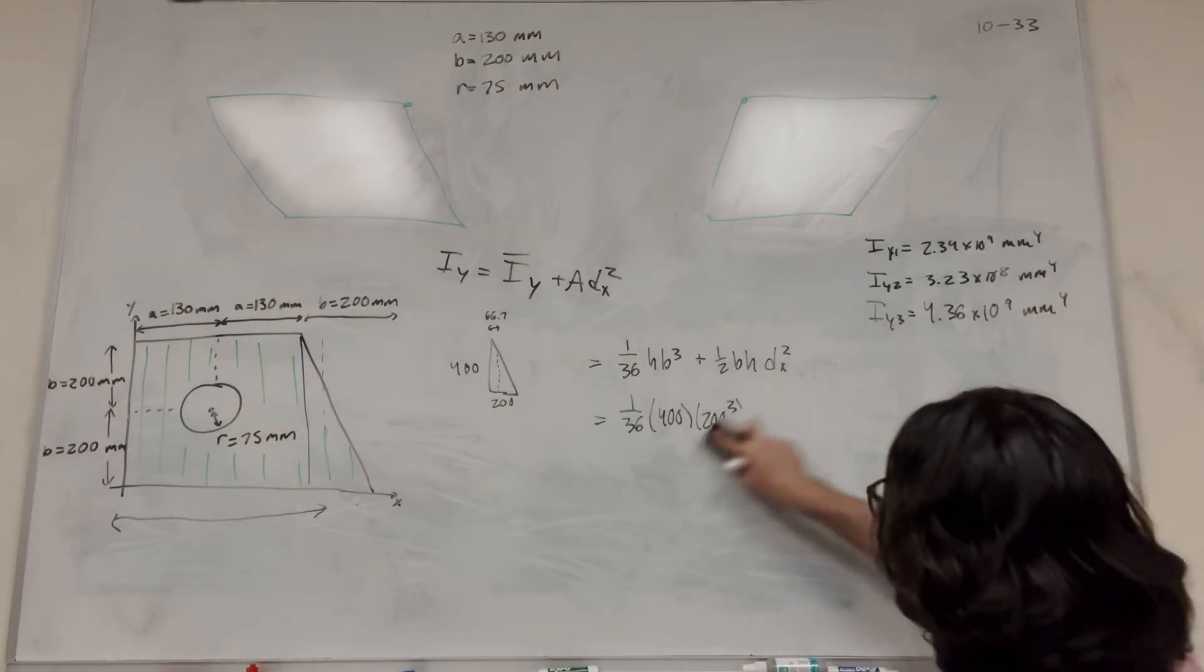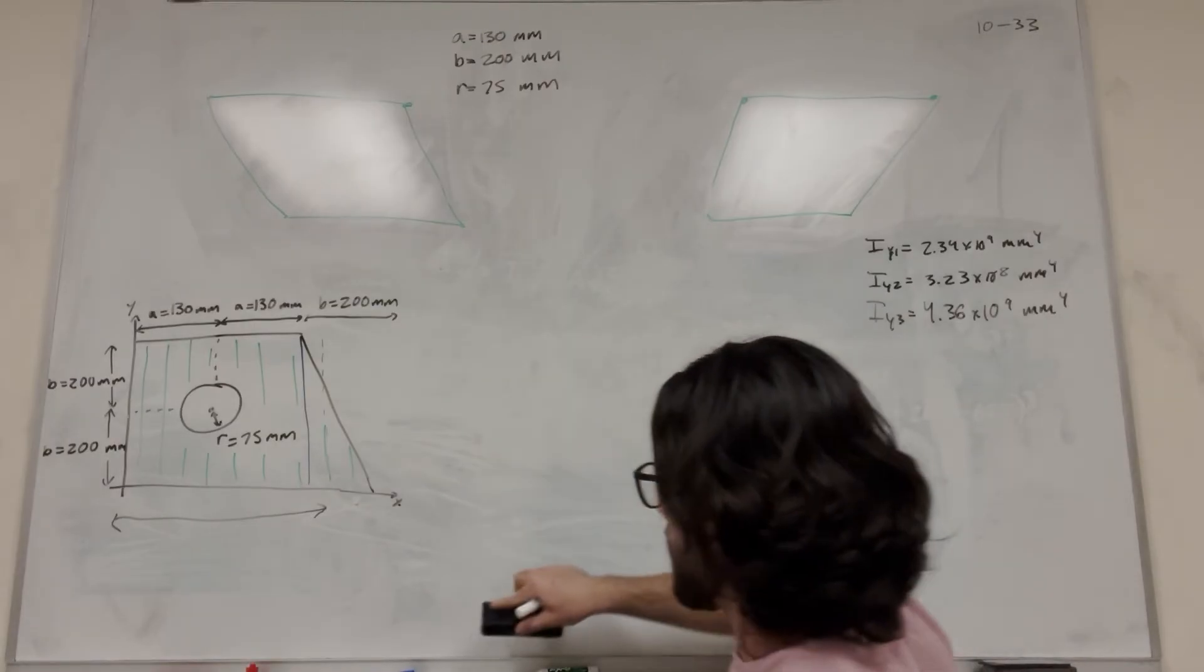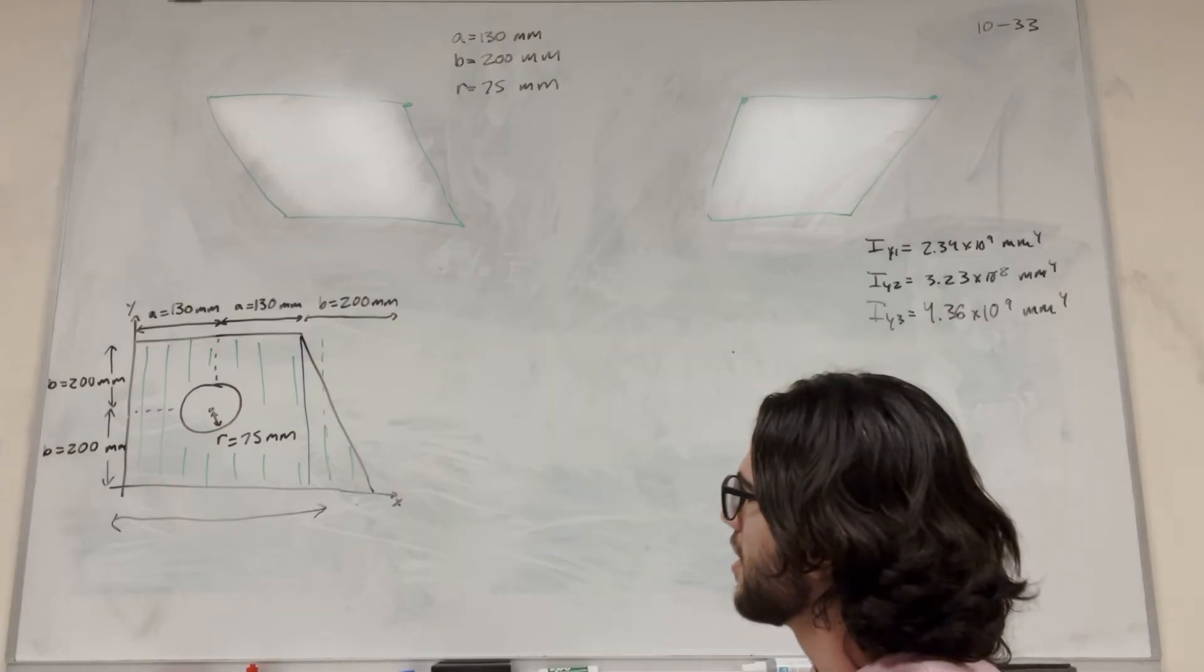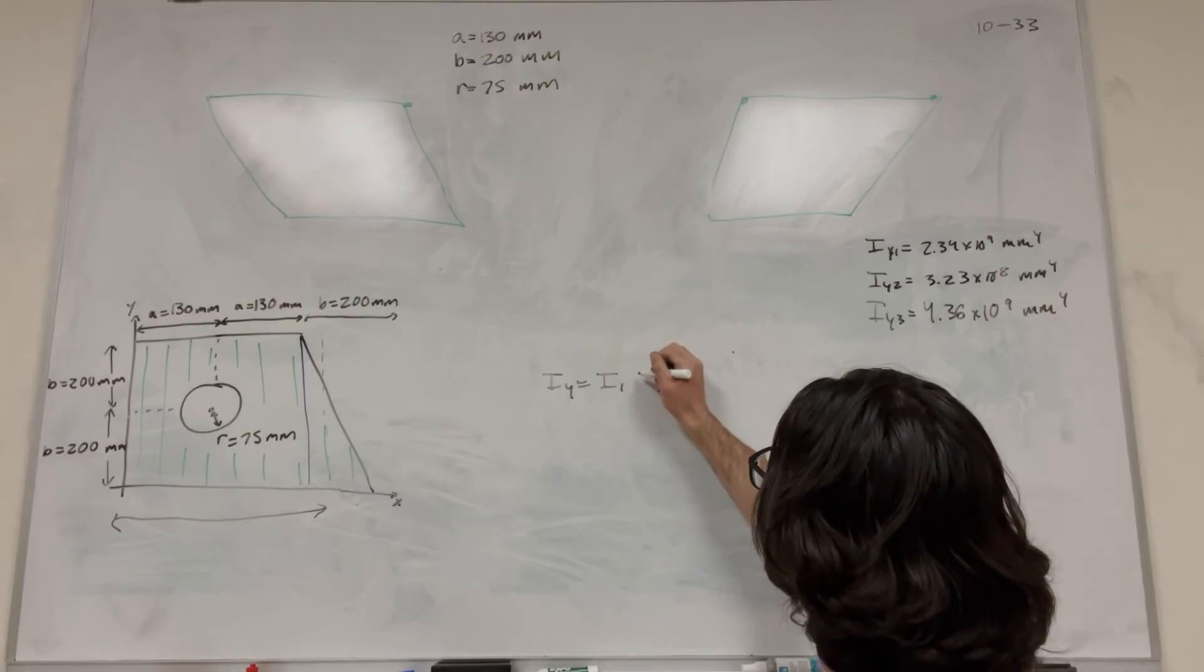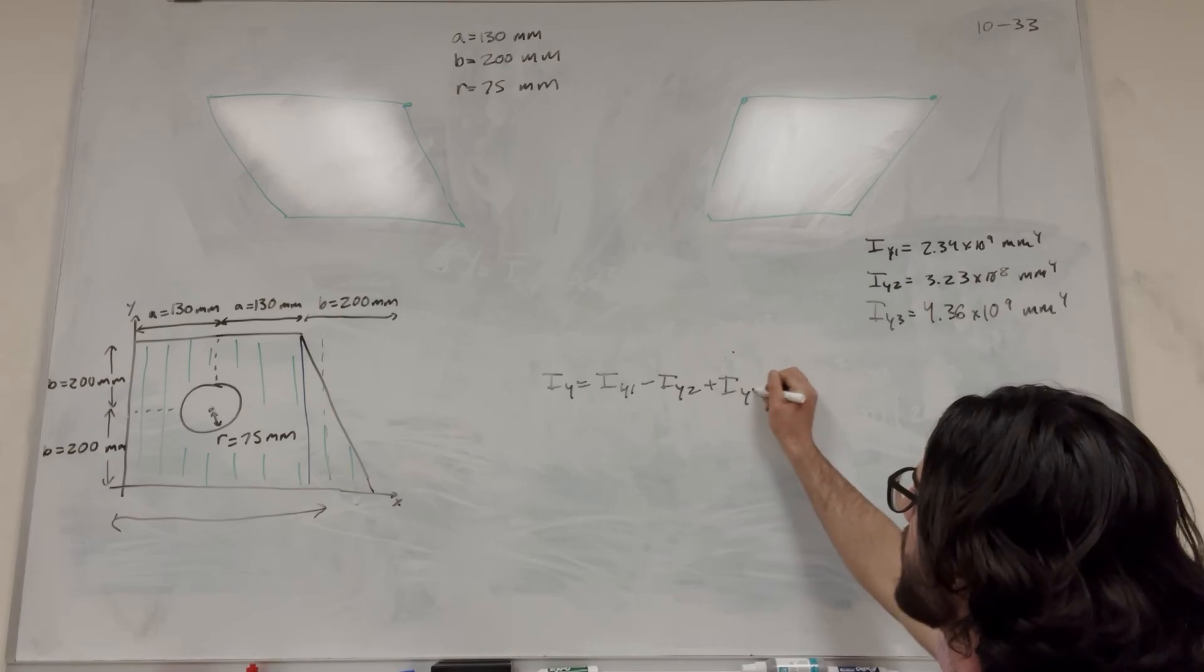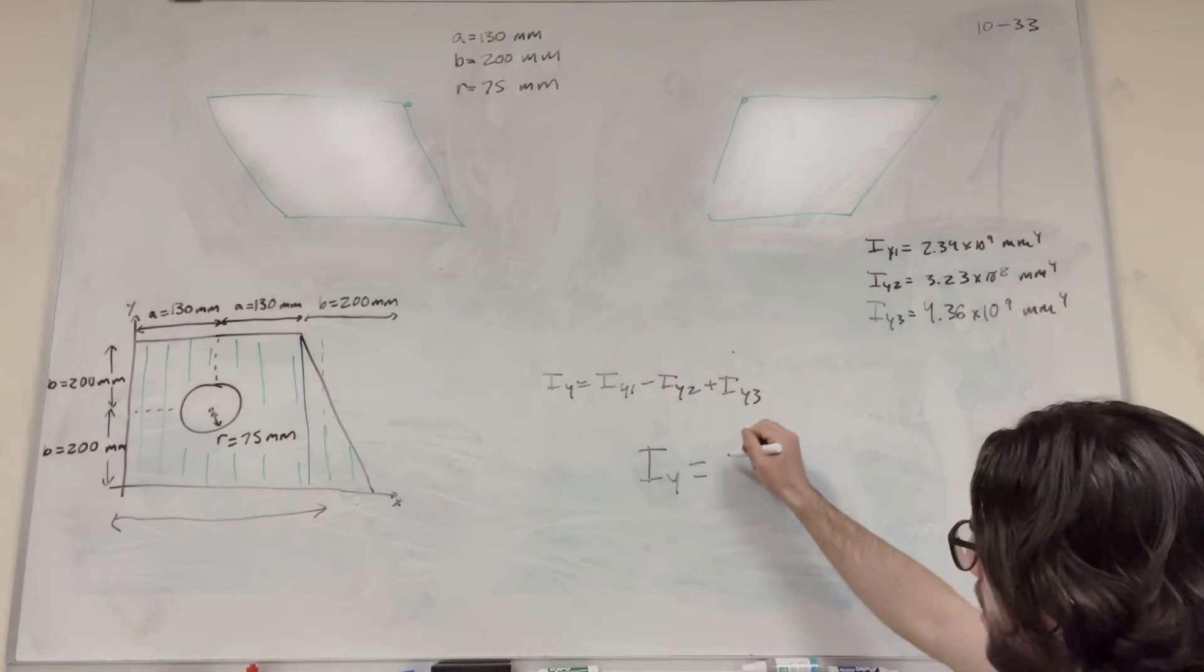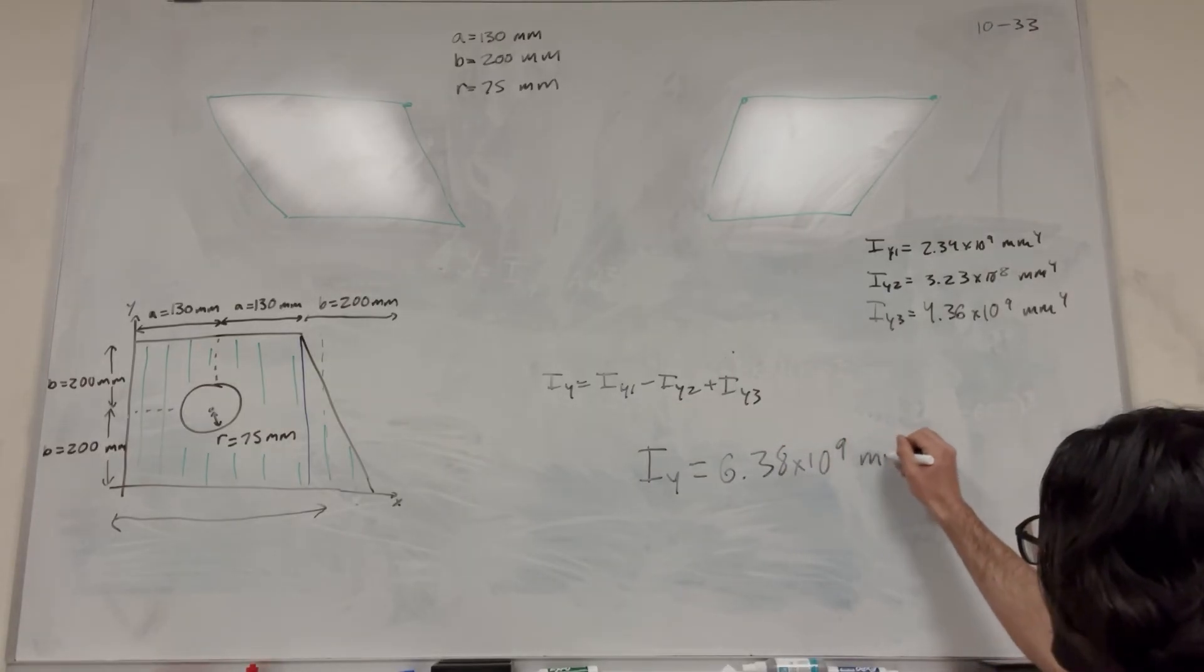Finally, we've got our three numbers. Usually you just add these three numbers together to get your total. But in this case, the circle is what we're going to need to subtract because the circle is taking out area. It's taking out inertia, basically. So our equation, I_y is equal to I_y of 1, minus I_y of 2, plus I_y of 3. Just put in those numbers for that, and you're going to get I_y. Our final answer is equal to 6.38 times 10 to the 9th millimeters to the 4th.